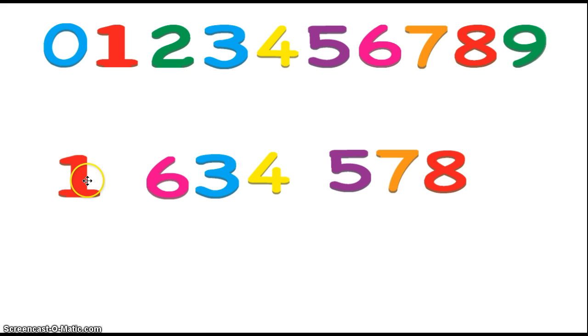Here is a number that uses 1, 2, 3, 4, 5, 6, 7 digits. This shows the number 1, 634, 578. It is a very big number, but it is made up of the digits 0 to 9.